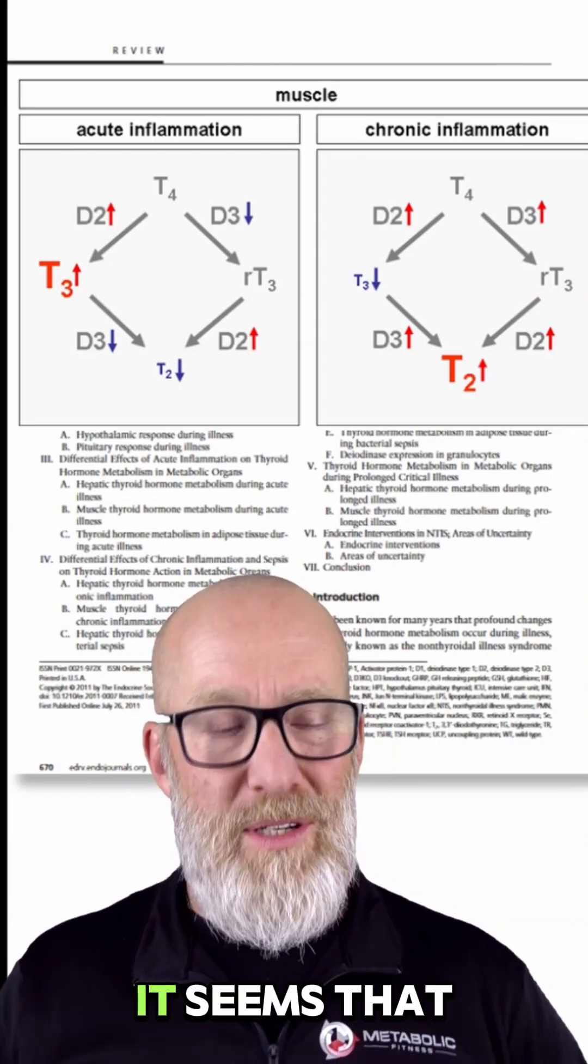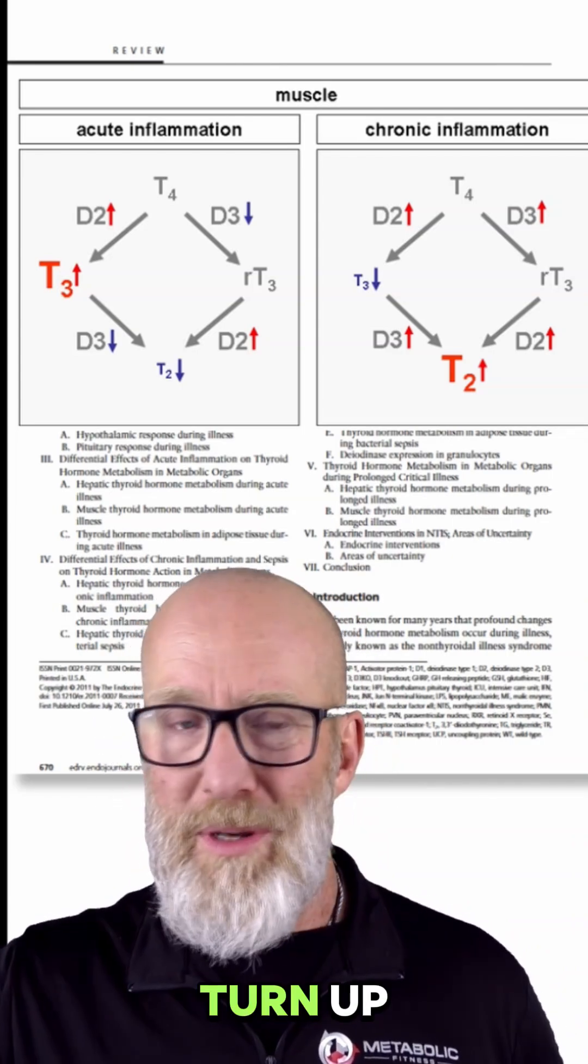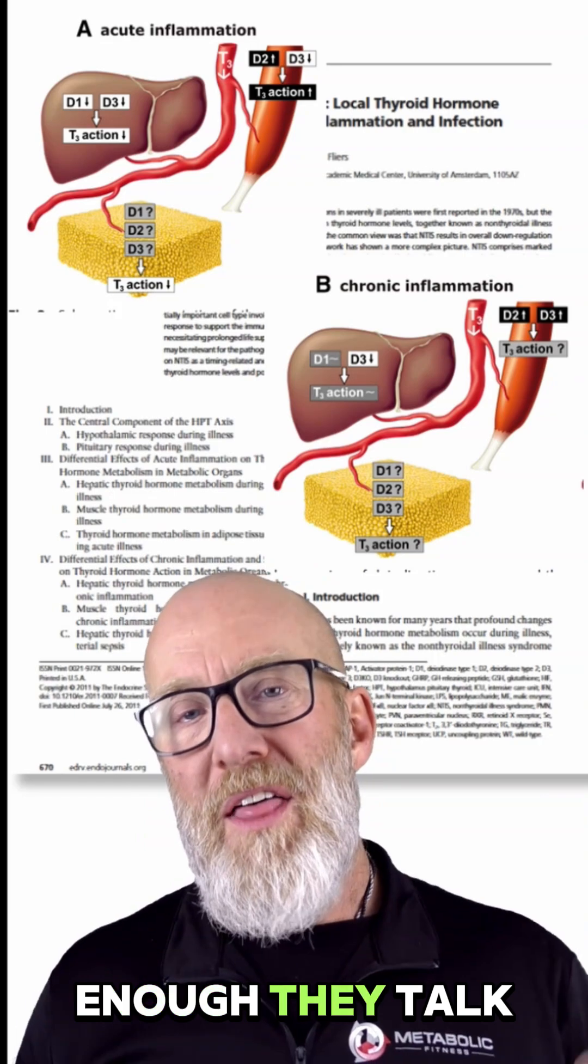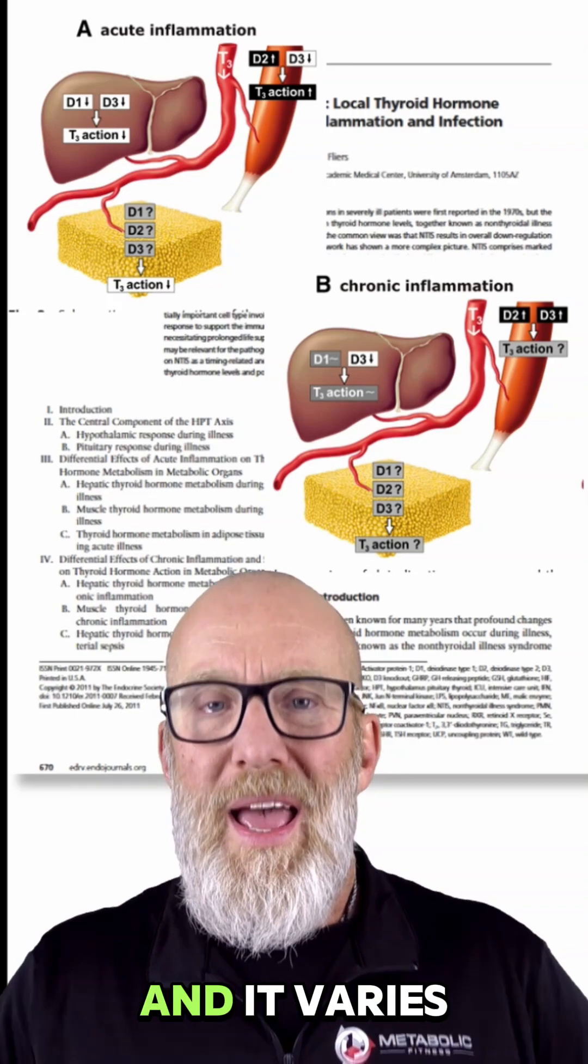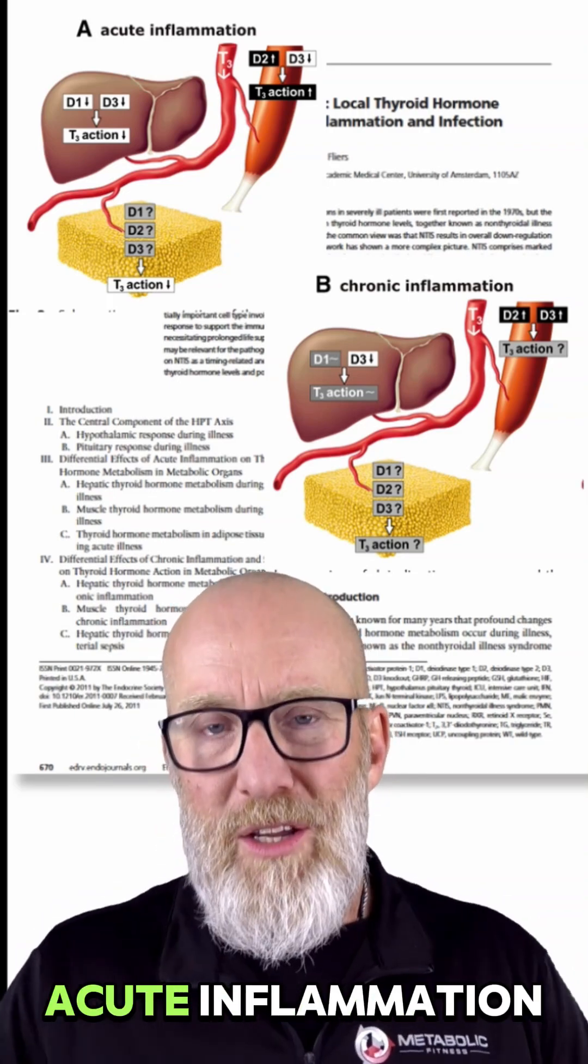And in chronic inflammation, it seems that D2 and D3 turn up. But that's not enough. They talk about not only skeletal muscle, but the liver and adipose tissue as well. And it varies in chronic and acute inflammation.